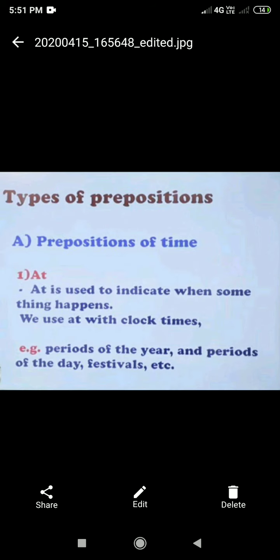Types of prepositions. First, prepositions of time. First, at. At is used to indicate when something happens. We use at with clock times, for example, periods of the year and periods of the day, festivals, etc.